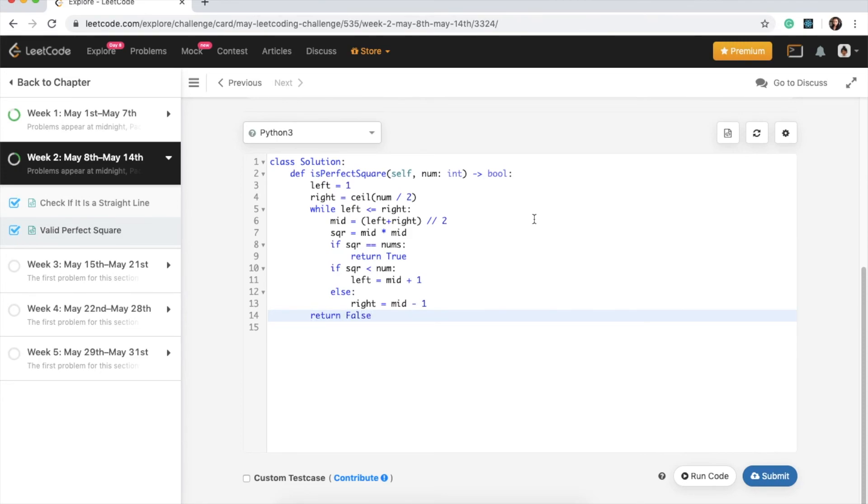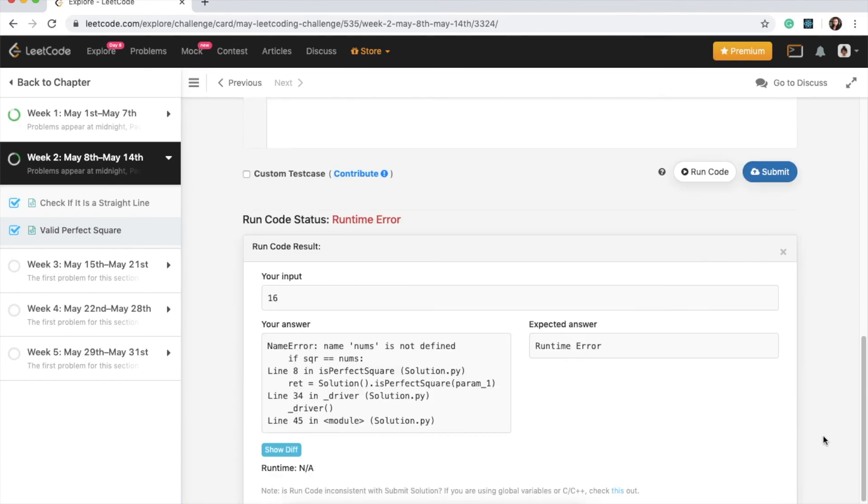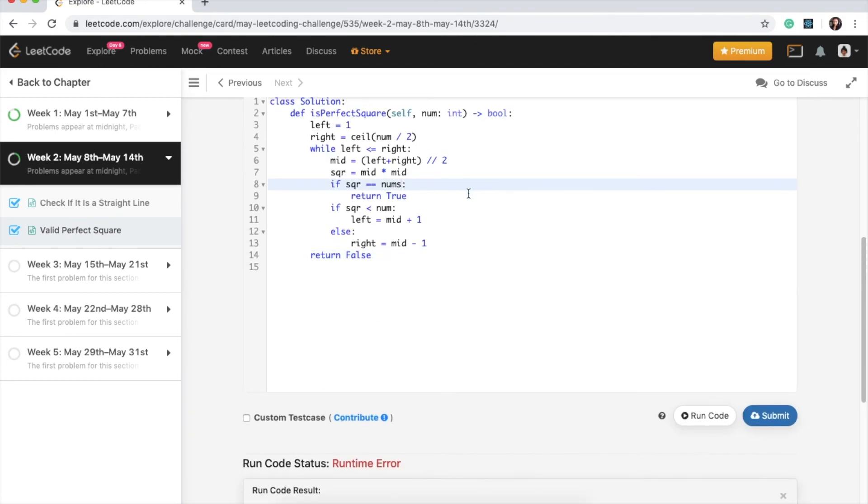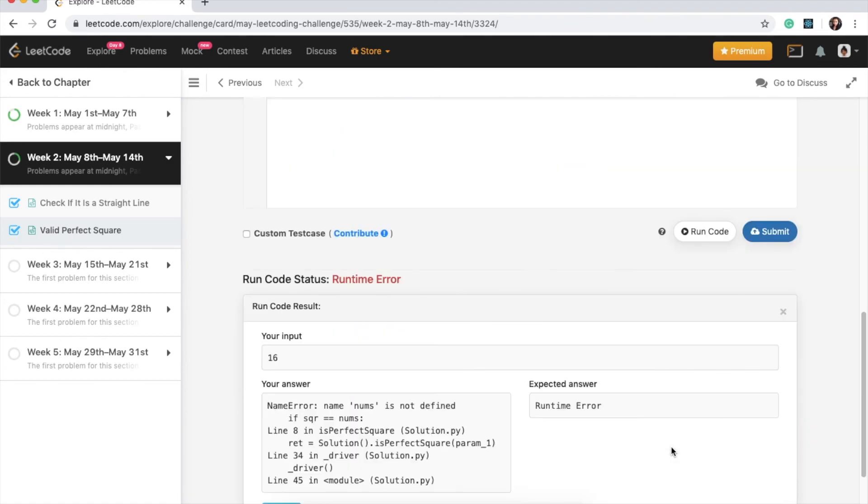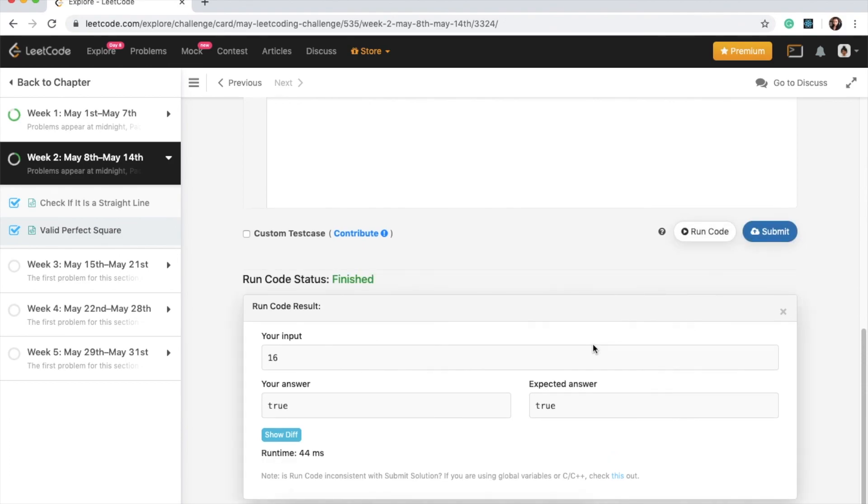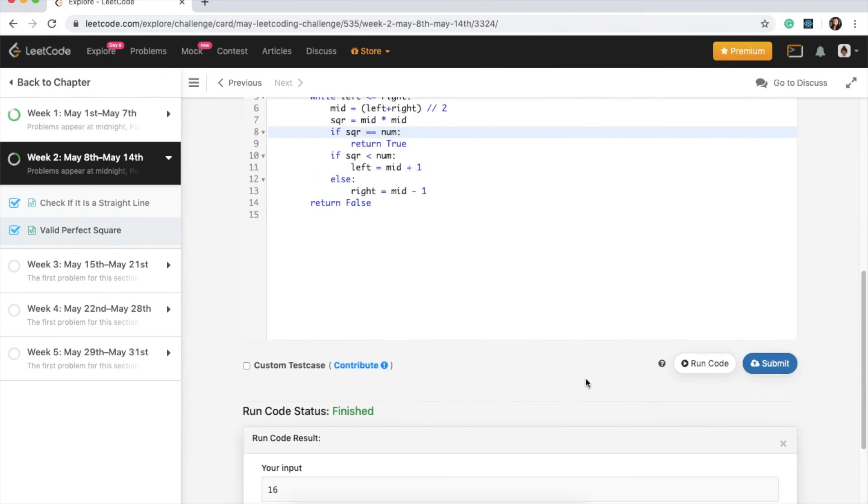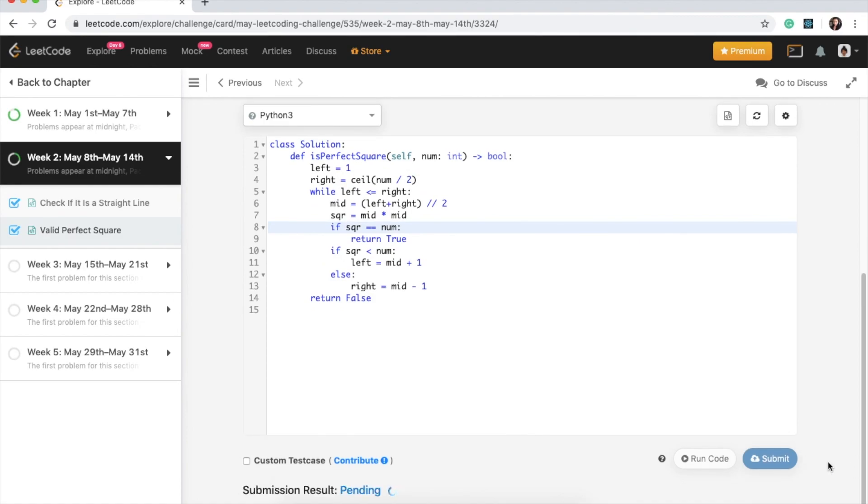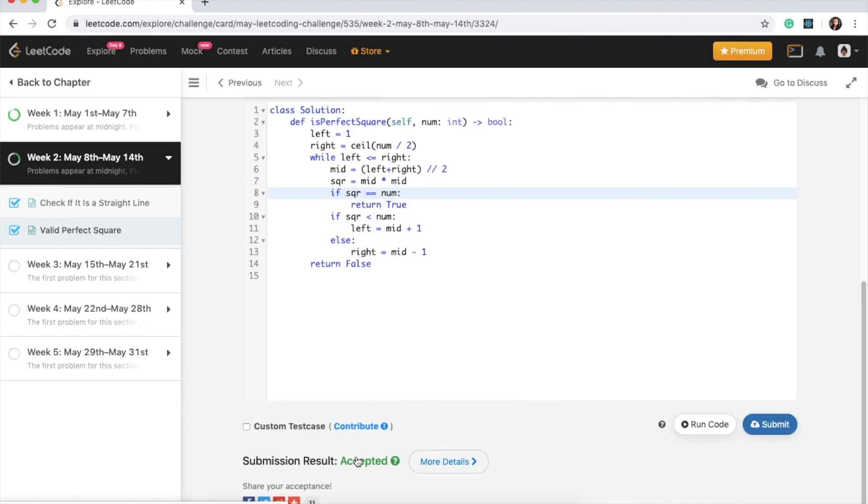Okay, so let's run code. Okay, we have a runtime error. Okay, there is a typo. So we need to say num, not nums here. Okay, run code. Okay, great. So my answer is the expected answer, and then I will go ahead and submit. Awesome, accepted.